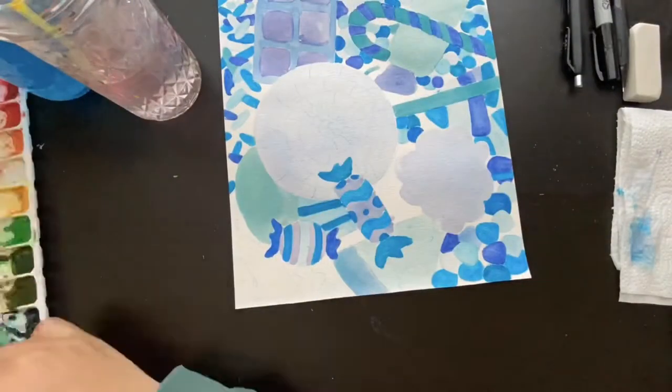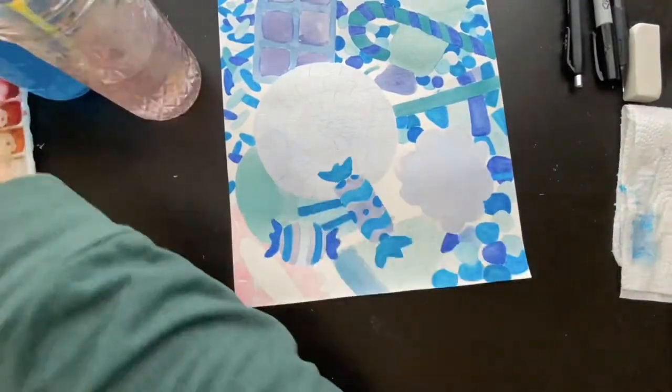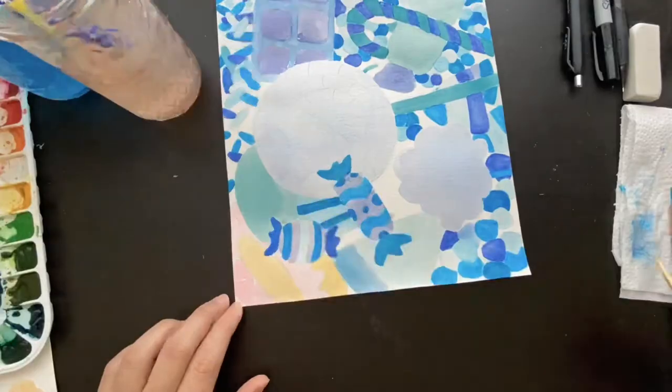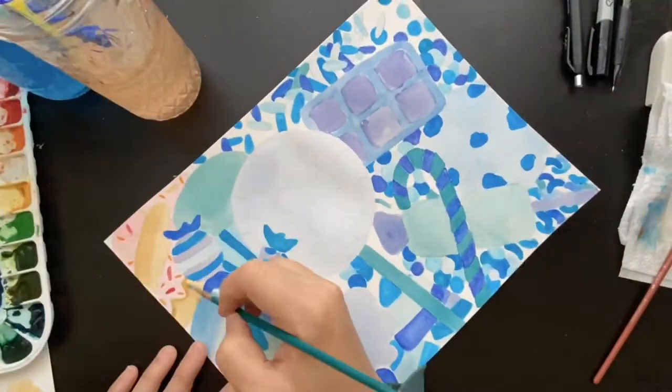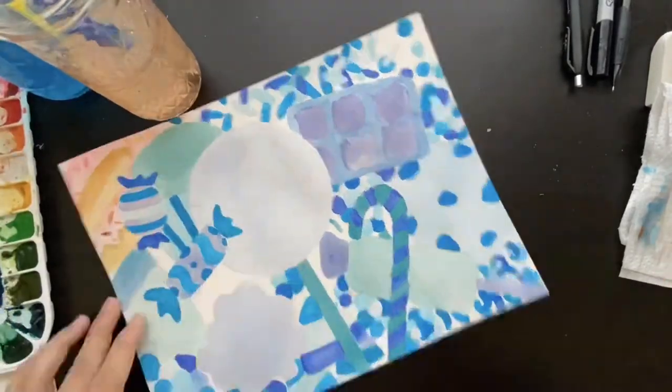Now for the focal point of this entire piece, the donut. I started off with a light, warm color layer so that that area will pop and be different than everything else on the page.